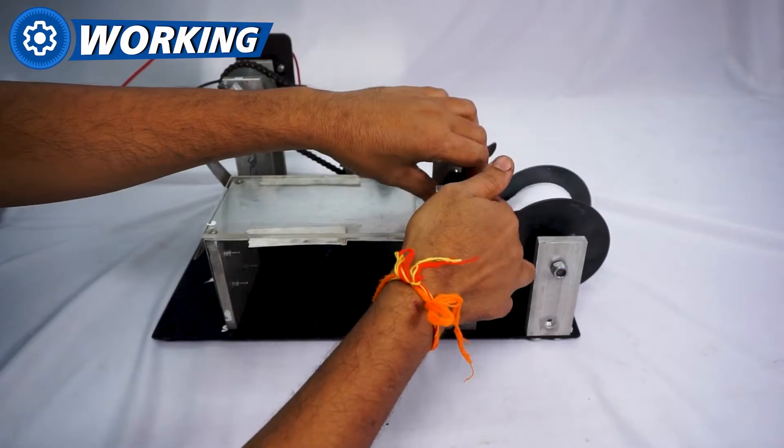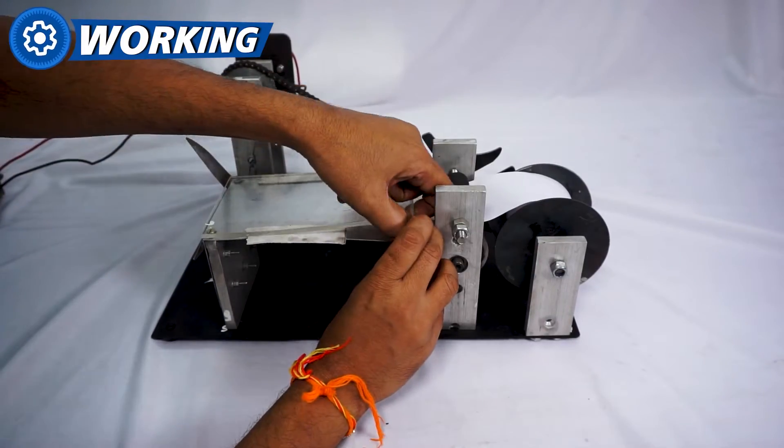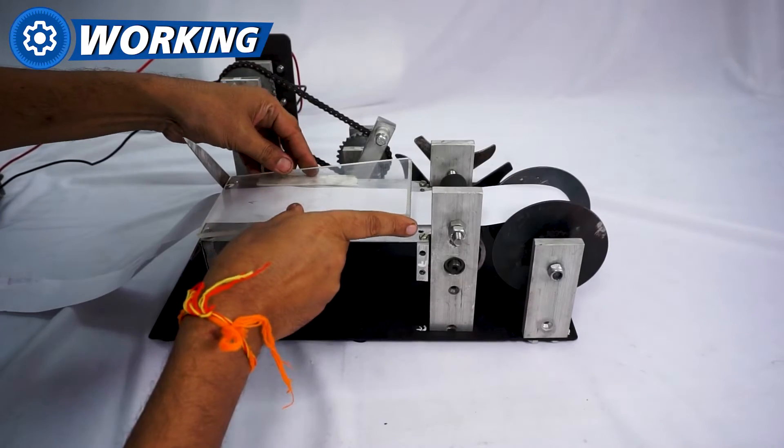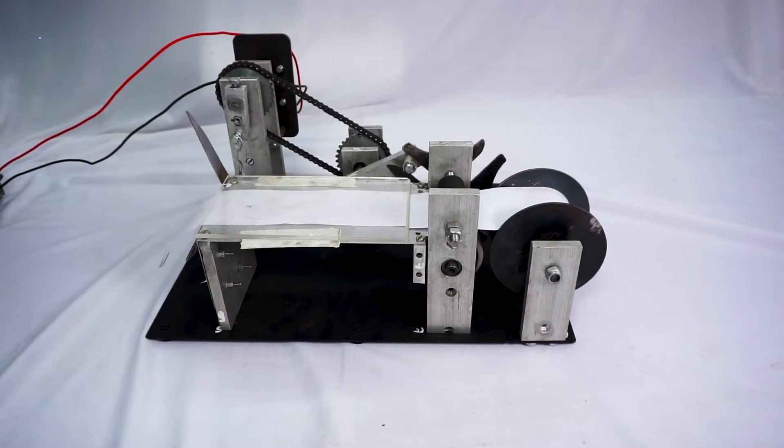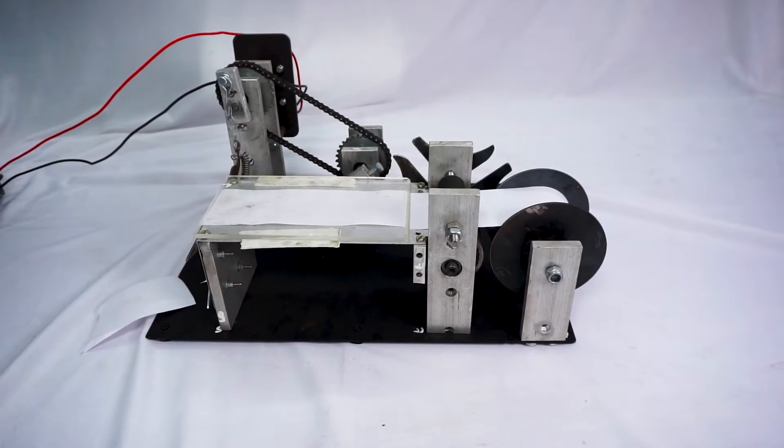So to start the system, we first connect one end of the paper roller from the bobbin into the system to start the cutting process and we turn on the motor. So as soon as the DC motor turns on,